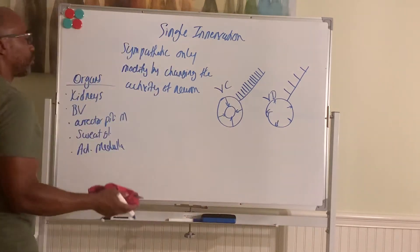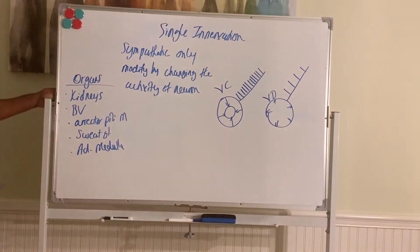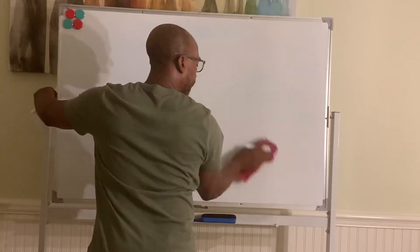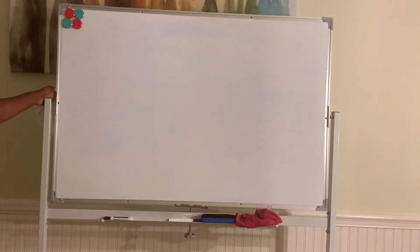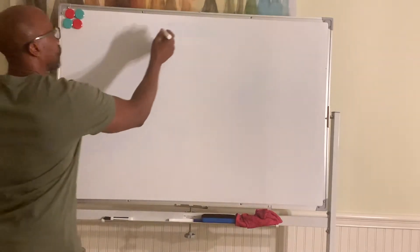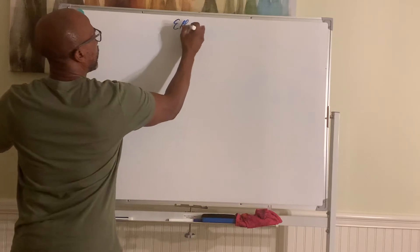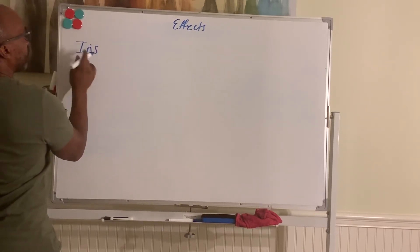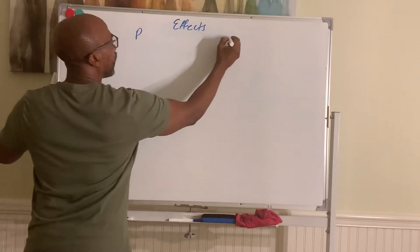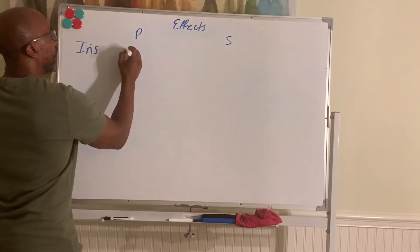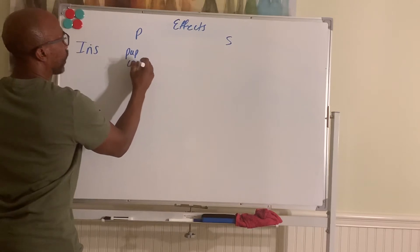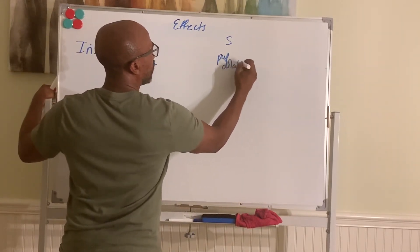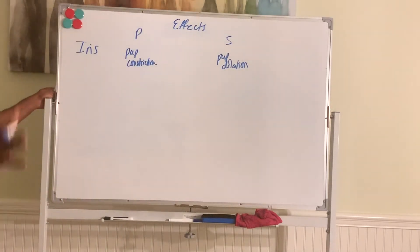Let's briefly run through a few organs and discuss how each division affects them. And again, we try to use, think of what you would do in an emergency for simpa, and what you do when you relax for para. So, effects. Let's begin with the iris. For the iris, para causes your pupillary constriction. So you have less light coming to the eye. Simpa causes pupillary dilation. So you can see more things coming in. Are you scared? You want to really capture the environment very quickly.